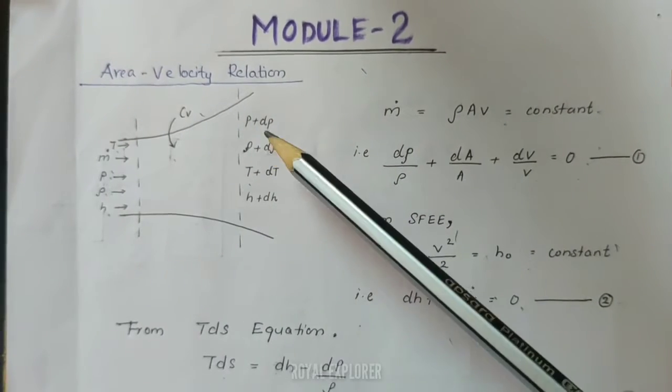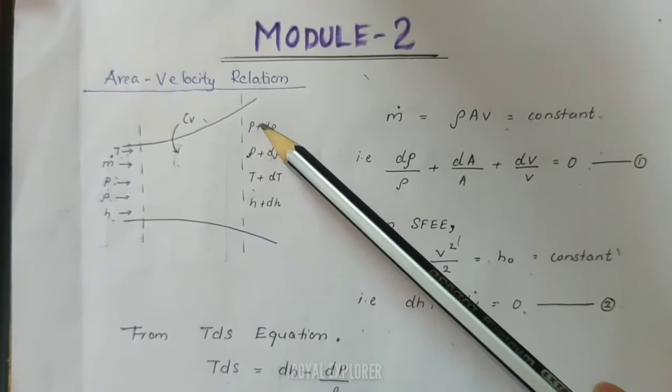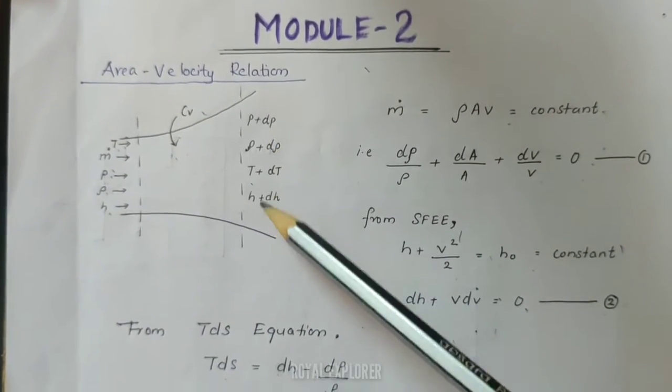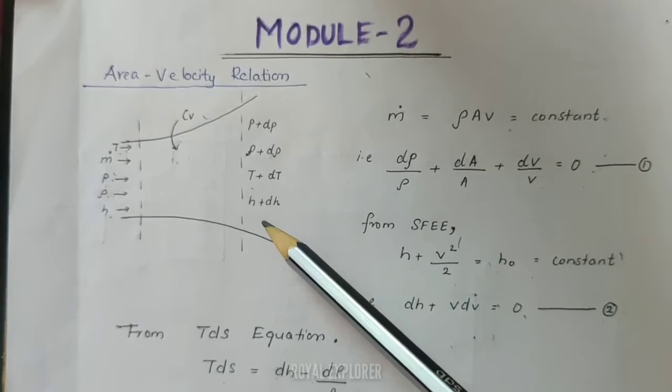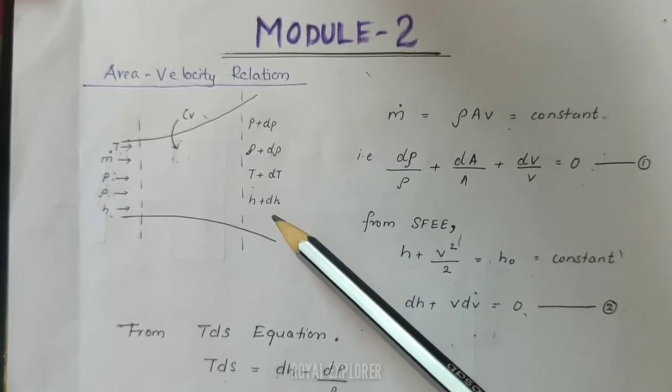At the exit, the conditions are pressure P plus dP, temperature T plus dT, and enthalpy H plus dH.